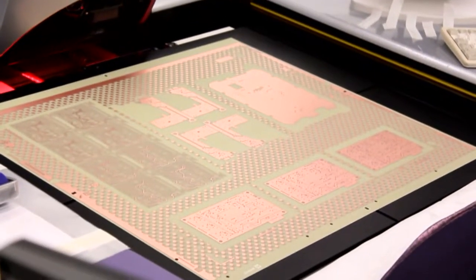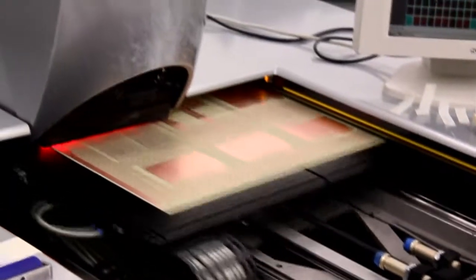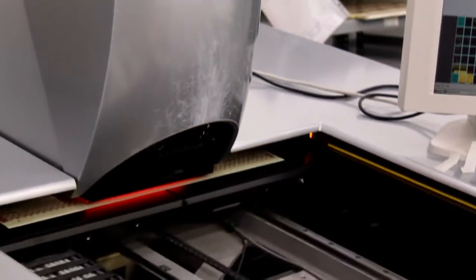The automatic optical inspection system scans the board in broad strips and compares it with the digital image generated from the original design data. Any errors are displayed on the screen.